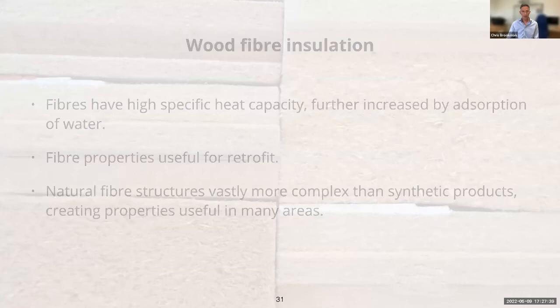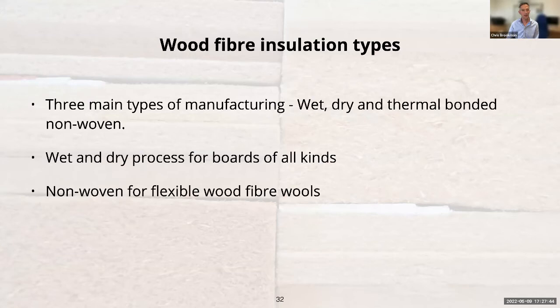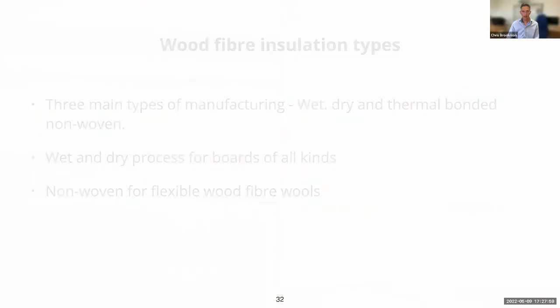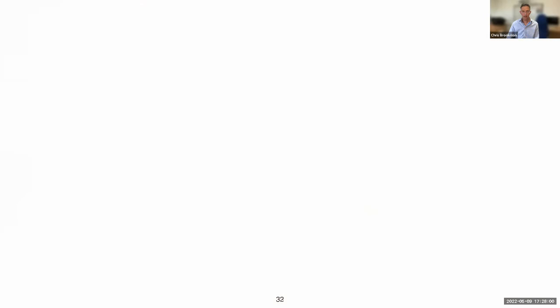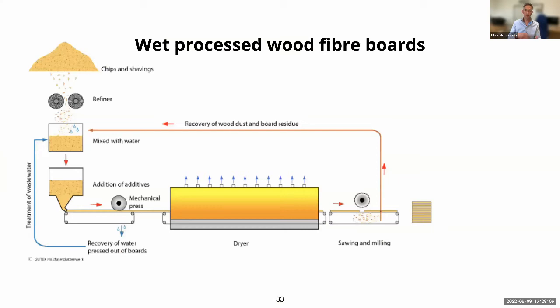There are basically three types of wood fibre. Two are boards: wet process and dry process. The third is flexible wood fibre — a thermally bonded non-woven process. Wet process boards are made rather like paper: waste timber is chipped, turned into small material, passed through a refiner to grind it into individual fibres, then mixed with water and other chemicals to disperse it further. That mixture is put onto a sieve and compressed to dry it, normally producing 20 to 25 mm layers.